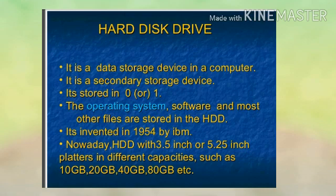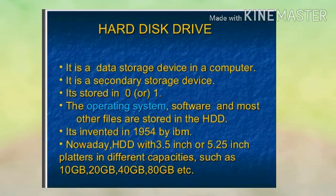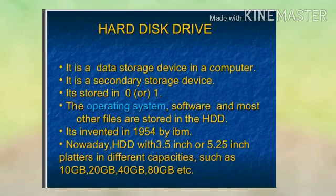A hard disk drive is also a secondary storage device in a computer. It stores data in the form of 0s and 1s. The operating system, software, and most files are stored on the hard disk drive. It was invented by IBM in 1954. Nowadays, hard disks are available in 3.5 inch and 5.25 inch platters in different capacities such as 10 GB, 20 GB, 40 GB, and 80 GB.